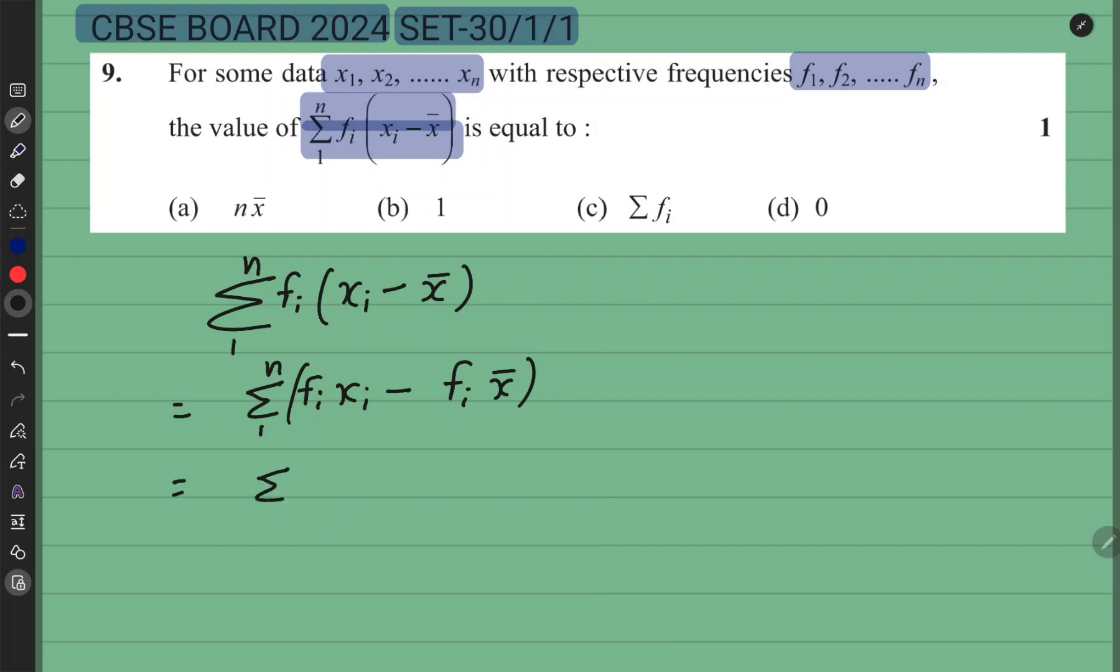Thik hai, ab summation ko distribute kar djeta hai. Plus minus me alag-alag ho jata hai summation. Toh summation 1 to n fi xi ka alag ho gya. Or minus summation 1 to n fi into x bar ka alag ho gya.